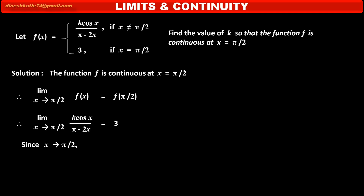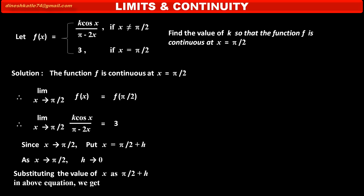Since x tends to π/2, x is nearest to π/2 but not equal to π/2. We can put x = π/2 + h, where h is the difference between x and π/2, so that we can solve this continuity easily. As x tends to π/2, h tends to 0. We now change the variable x in terms of h by substituting x = π/2 + h into the above equation.